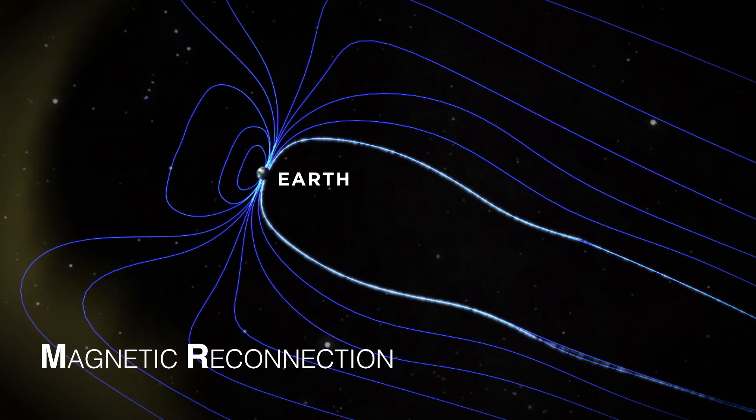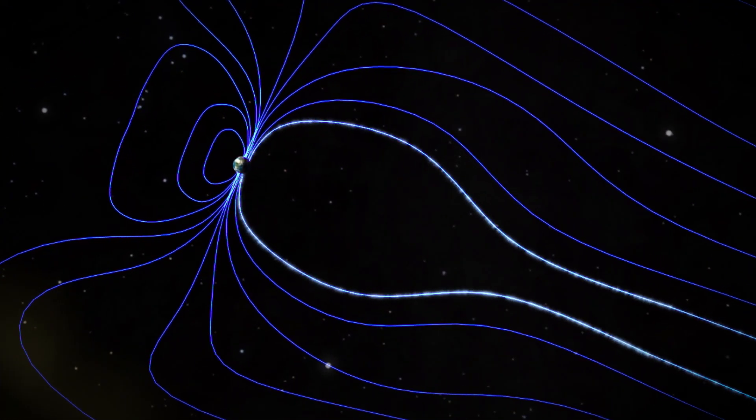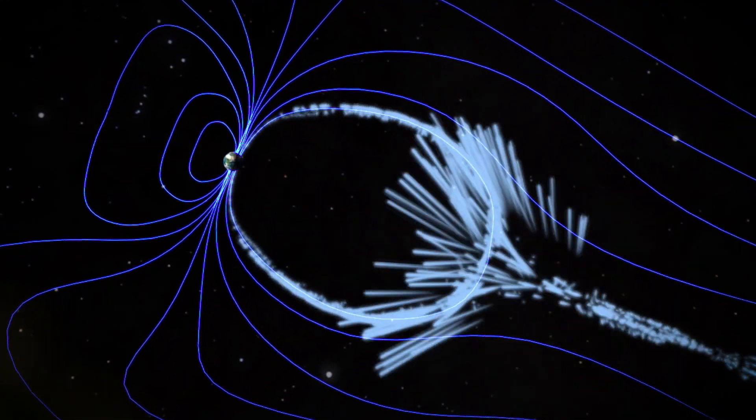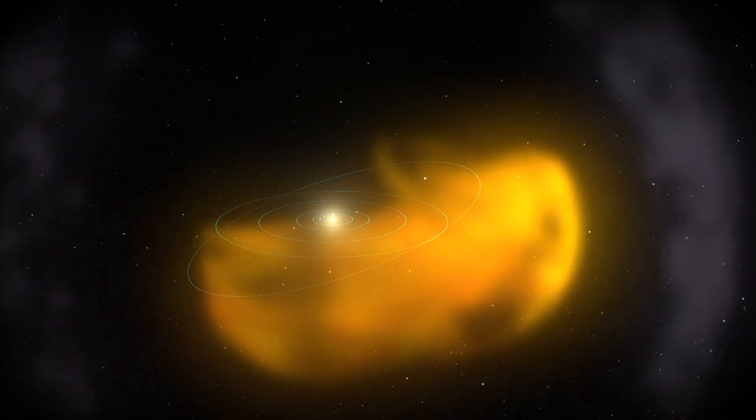Magnetic reconnection occurs where magnetic field lines are constantly shifting. When the lines become tangled, they explosively snap and realign. This transfers energy and sends nearby plasma particles flying through space.